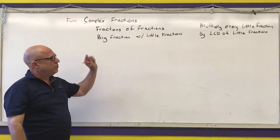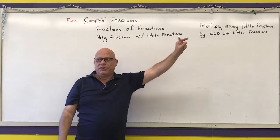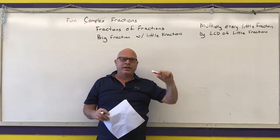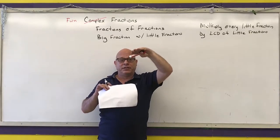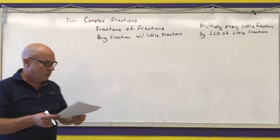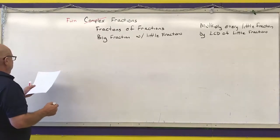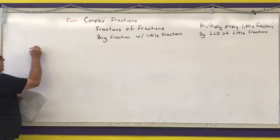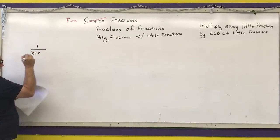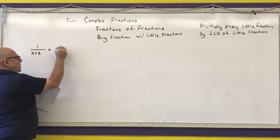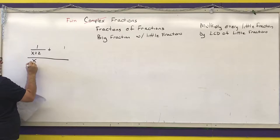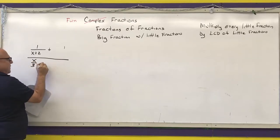When I do this step, you're going to see that all my little fractions disappear, and I'm left with just a big fraction. Then we're back to simplifying a rational expression. The first example is: 1 over x plus 2, plus 1, all over x minus 3, minus 1.